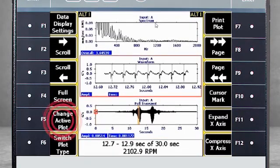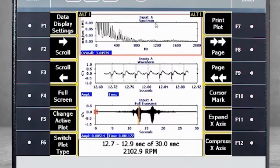When I toggle F5 change active plot, you'll see the red box around the full transient display move to the waveform, and then the spectrum. This makes the spectrum our active plot.